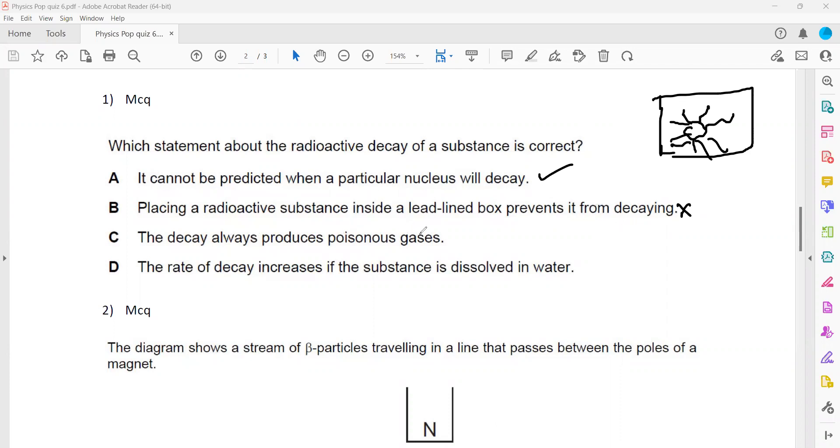The decay always produces poisonous gases - that's totally wrong. It can produce anything. It can be any element produced by the decay. The rate of decay increases if the substance is dissolved in water. It is a spontaneous process. So changing temperature, changing the state, changing the pressure won't affect the amount of radiation coming out. That's why option A is the valid answer.